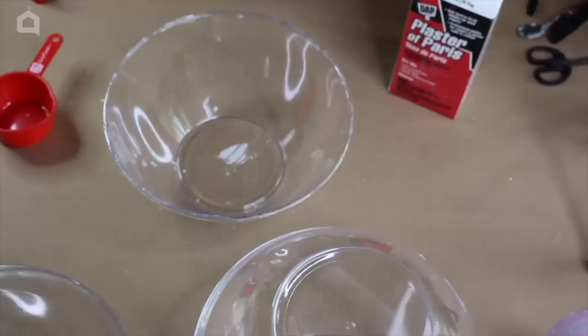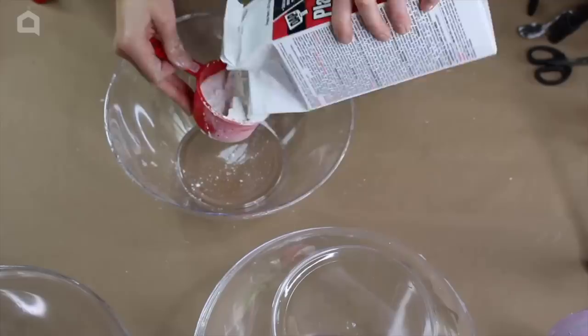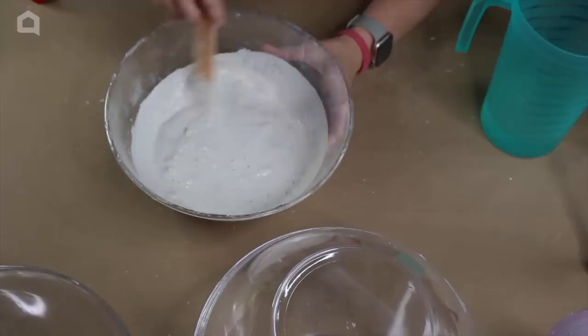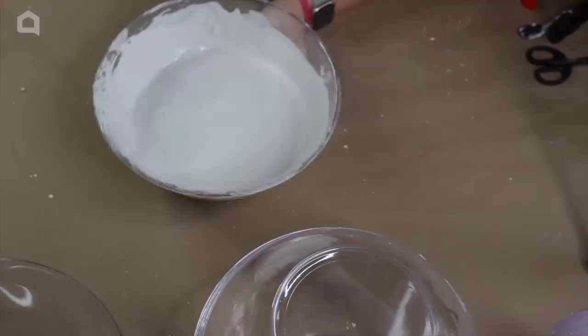Before we recreate this same idea, what I want to do is I want to give this a little bit of weight. So we're going to be using plaster of Paris. Essentially the way you're going to mix this is you're going to do two parts plaster of Paris, one part cold water. We're just going to stir it until it's kind of like a smooth texture.